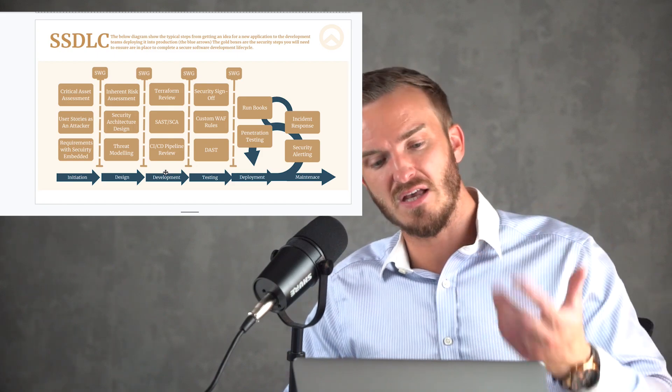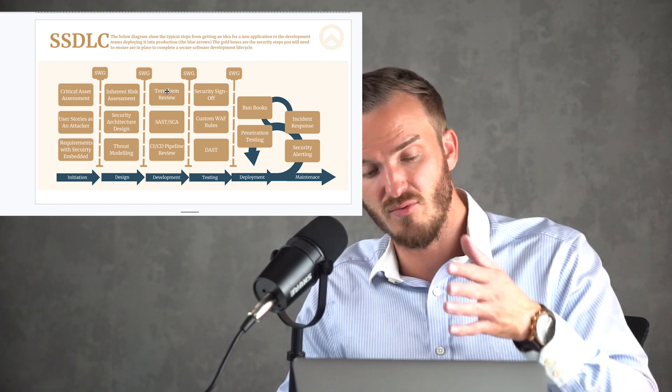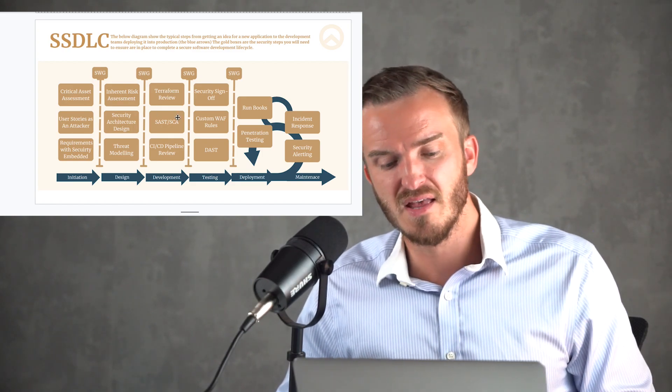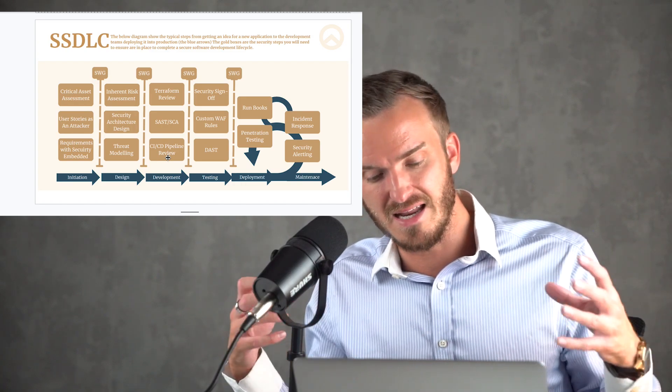Then as the team develops their code, we do the review of their Terraform code. More in particular, we'll put in place an infrastructure as code scanner, which I'm going to talk through in a bit. Then we do SAS and SCA scanning, which we're going to cover in a minute. And then we do a review of the whole pipeline, all the security steps as part of the pipeline and any gates that we have.